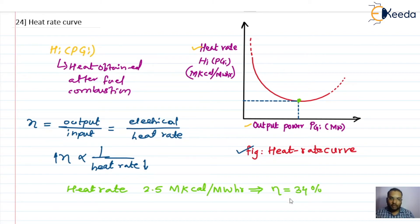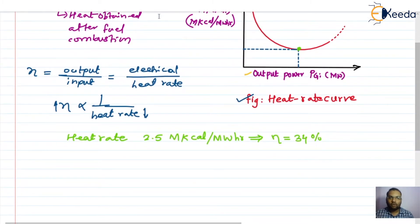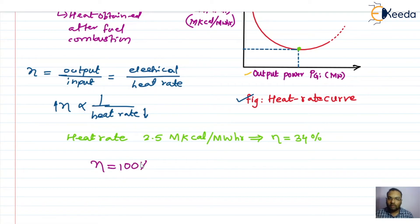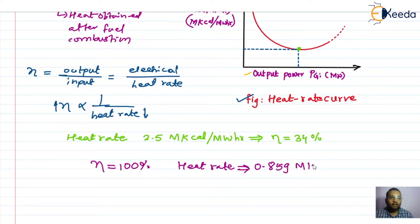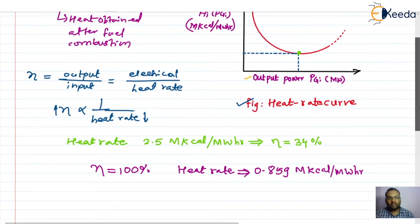If you want to have 100% efficiency — which is practically not possible but can be examined theoretically — the heat rate value required would be around 0.859 Mega kilocalories per megawatt-hour.